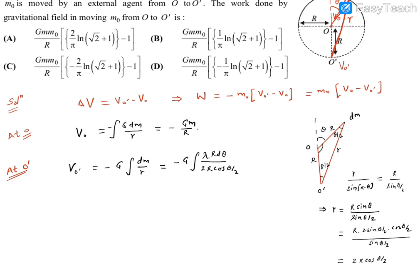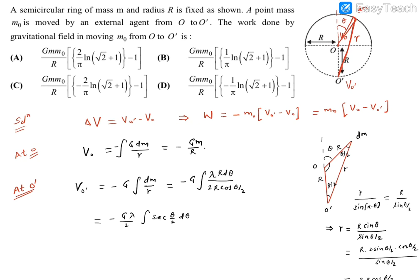Substituting small r into the potential integral, capital R cancels out, and we get minus G lambda divided by 2 cos(theta by 2), times cos(theta by 2) d_theta, which simplifies nicely. We integrate theta from minus pi by 2 to pi by 2, covering the full semi-circular ring. The 2s cancel out, leaving minus G lambda times the integral of sec(theta by 2) d_theta.